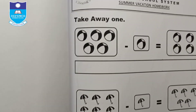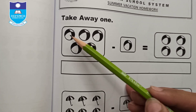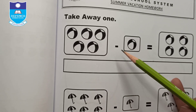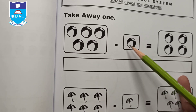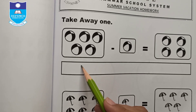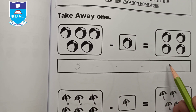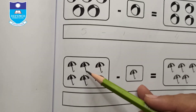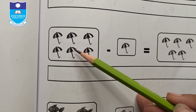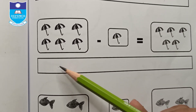Take away one. For example, there are five balls — 5 minus 1 equals 4, so write 4. Count the objects in each picture, subtract one, and write the answer.